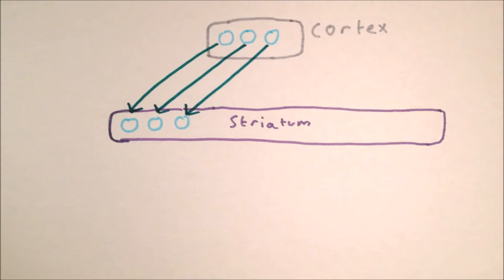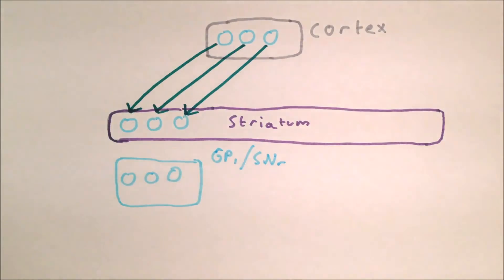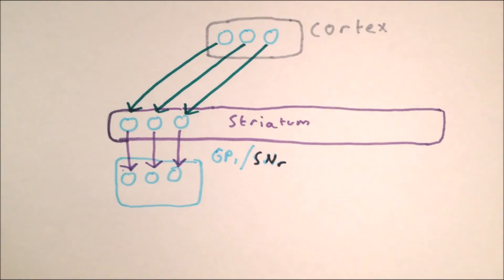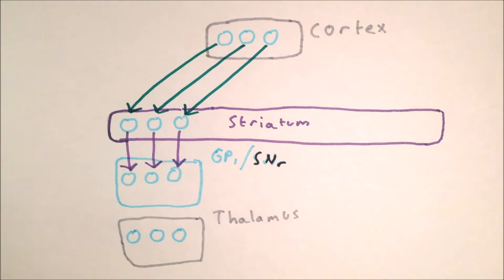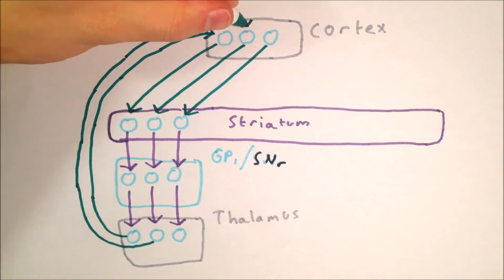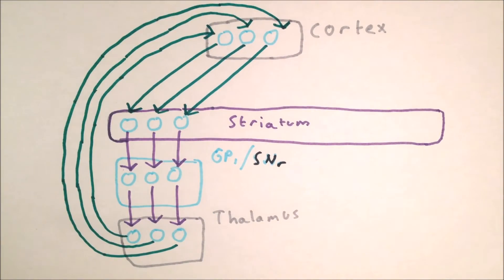The direct and indirect pathways from the previous model are replaced by the selection and control pathways. In the selection pathway, inputs from the cortex excite the striatum, which inhibit the corresponding neurons in the globus pallidus interna and substantia nigra pars reticularis, reducing their inhibition of the corresponding neurons in the thalamus and allowing this loop to excite the cortex.